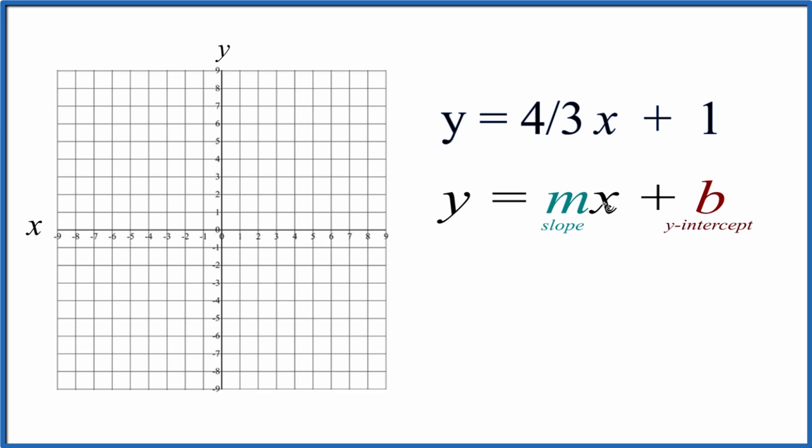So we have y equals mx plus b. b is the y-intercept, and that's one. So we go to the y-axis, and we go to one. That's where the line y equals four-thirds x plus one is going to cross the y-axis right here at the y-intercept.